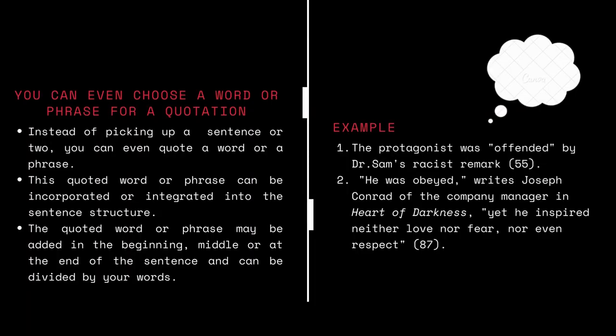Do you think that we have to choose only a whole sentence or two or three sentences for quotation? No, you can even choose a word or a phrase for a quotation. Instead of picking up a sentence or two, you can even quote a word or a phrase. This particular quoted word or phrase can be incorporated or integrated into the sentence structure. The quoted word or phrase may be added in the beginning, middle, or even at the end of the sentence and can be divided by your own words. Sometimes you won't need the entire sentence, so you can be specific and choose a word or a phrase.